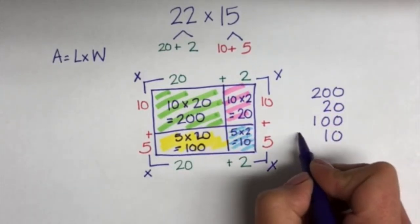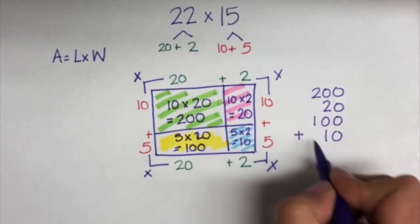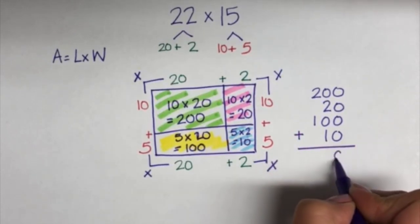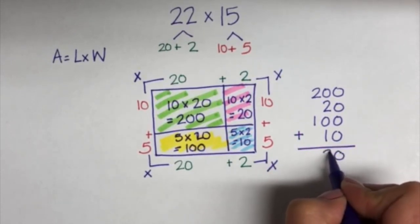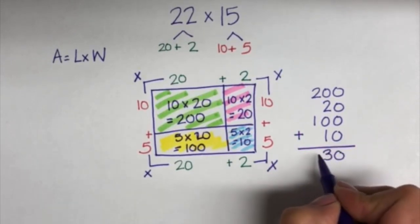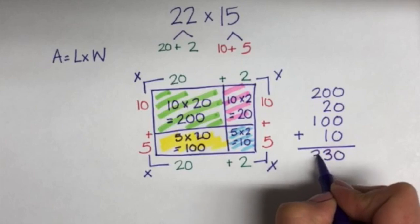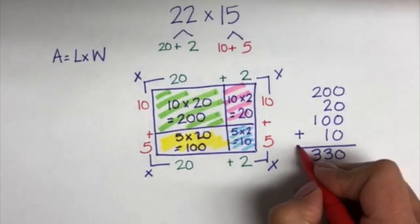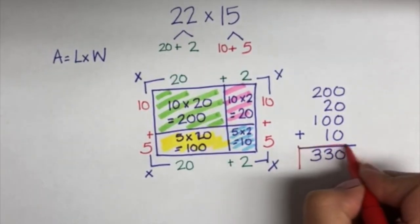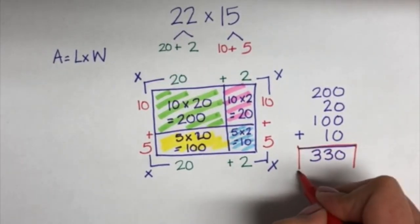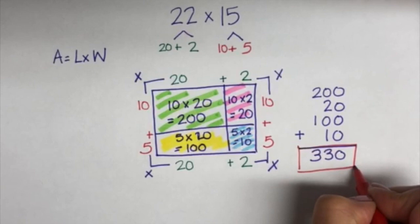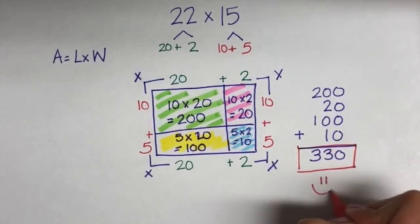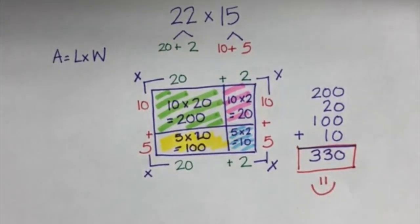I am going to add these 4 partial products to get my final answer. This step is fairly easy because I took the time to break apart my numbers into numbers that are easy to work with. And here is my final product of 330.